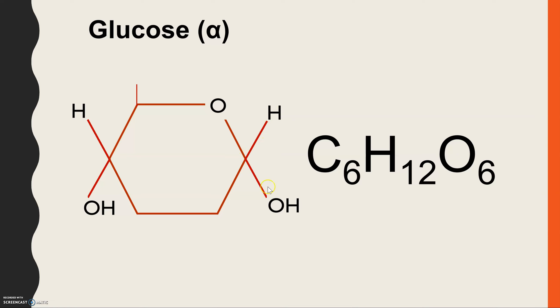Carbon two, carbon three, carbon four, which also has a hydrogen and hydroxyl. Carbon five and carbon six. And you may notice up here we've got an alpha symbol. And that's because there's actually two isomers of glucose.